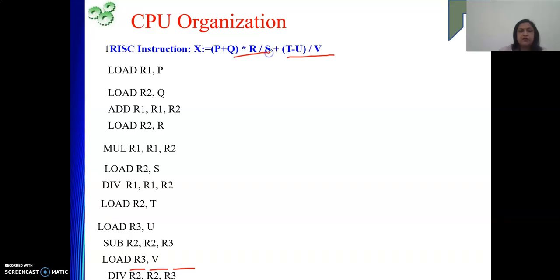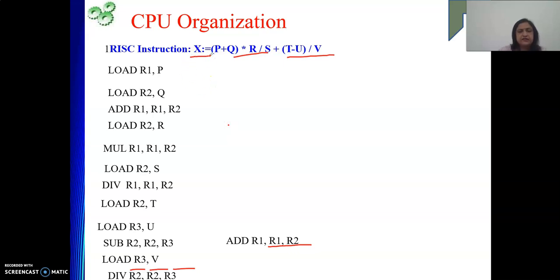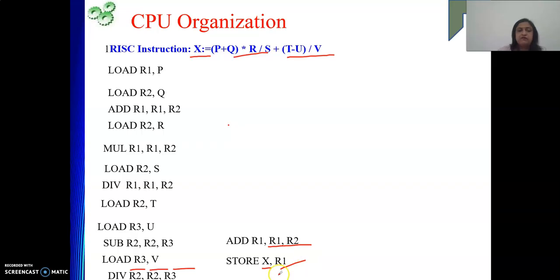Now R1 holds the first part and R2 holds the second part of the expression. We simply add them: ADD R1, R1, R2 — the result is stored in R1. At the end, the result needs to be sent to memory location X. The instruction to transfer content from CPU to memory is the store instruction: STORE X, R1 — the value from R1 is transferred to memory location X.